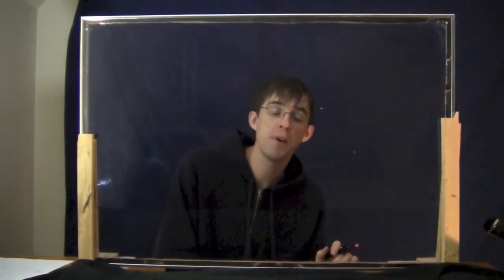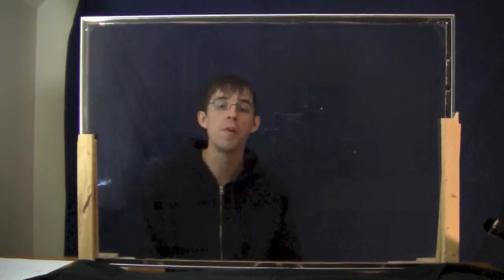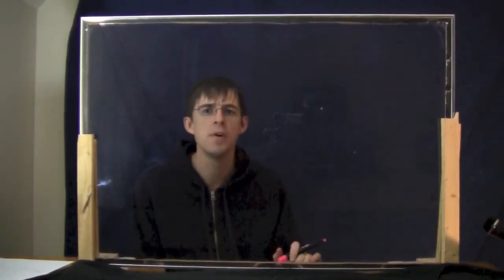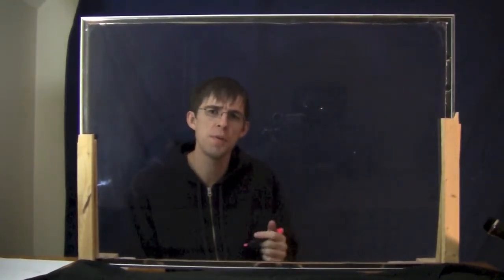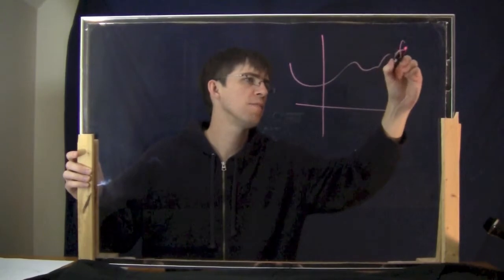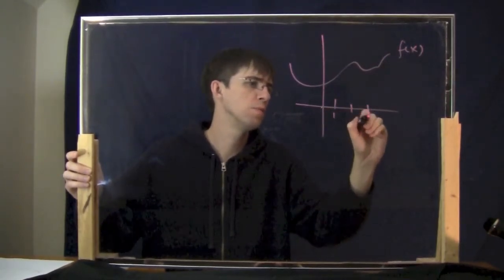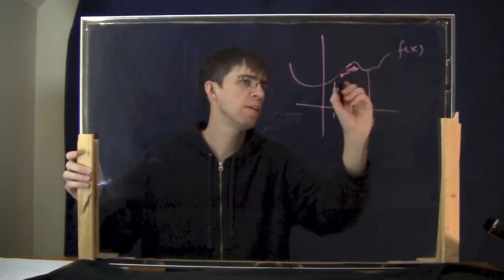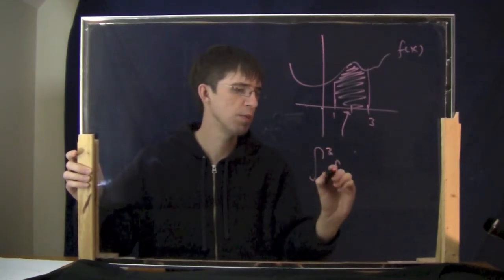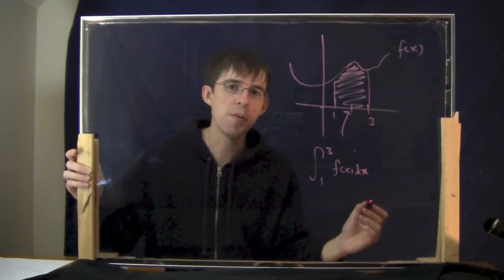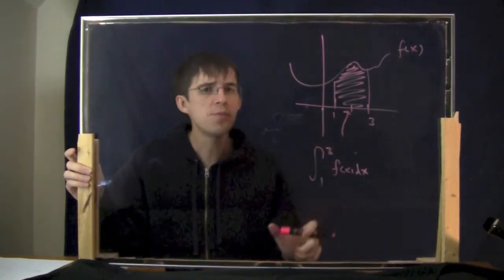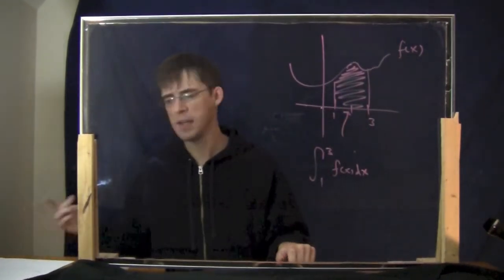Now that we have the fundamental theorem of calculus, we know how to find the area under the curve. That allows us to find areas of regions you see on a graph. Usually you just use the fundamental theorem of calculus — for example, if I have some function f(x) and I want the area from 1 to 3, that's just the integral from 1 to 3 of f(x) dx. Some kinds of regions, though, can be more complicated.